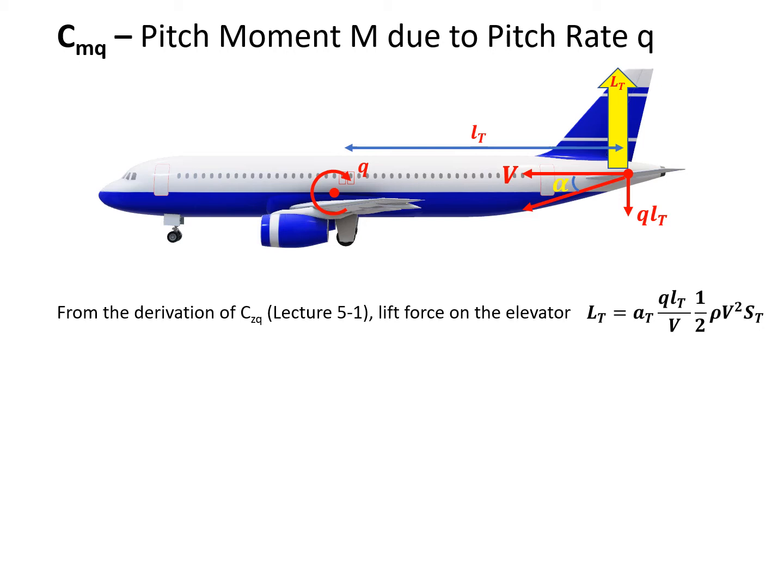We're looking at the pitching moment change, and the pitching moment is actually LT times the moment arm. So the lift force acting on the elevator times the moment arm LT. We have the moment calculated as minus LT times small lT. Why do we get a negative sign? This is because the moment from the lift force is pointing to the left wing, so it is negative in direction.